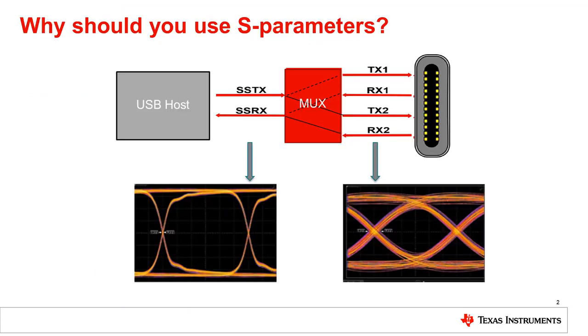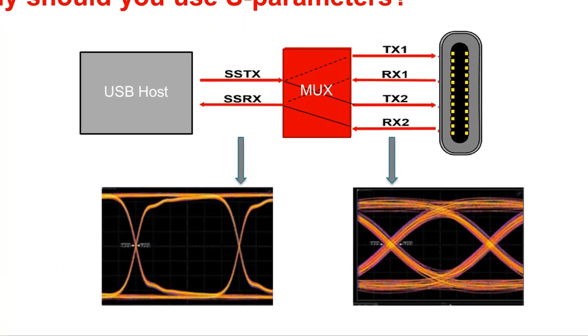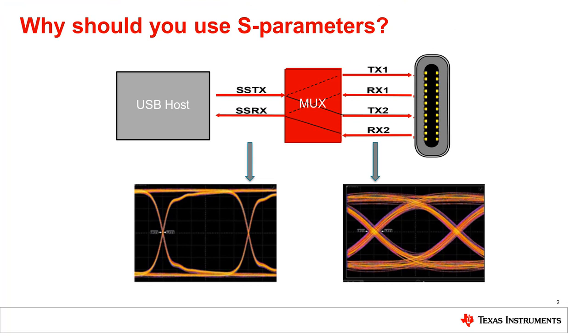Before moving on to the S-parameter model, you may ask why we need to use S-parameters. Let's look at a typical USB Type-C application example. A channel with a USB 3 transmitter TX and a receiver RX matches the characteristic impedance within the channel. However, the output waveform at the connector is degraded compared to the input waveform. So why is the waveform at the connector output degraded?